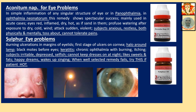Aconitum Nap for eye problems: useful in simple inflammation of any singular structure of the eye — eyelids, conjunctiva, or cornea — and also in panophthalmia (all structures inflamed) and ophthalmia neonatorum (newborn baby's ophthalmia). Mainly used in acute cases. Eyes red, inflamed, dry, hot, as if sand in them, with profuse watering after exposure to dry cold wind. Onset is sudden and violent. Subject is anxious and restless both physically and mentally, tosses about, and cannot tolerate pain.